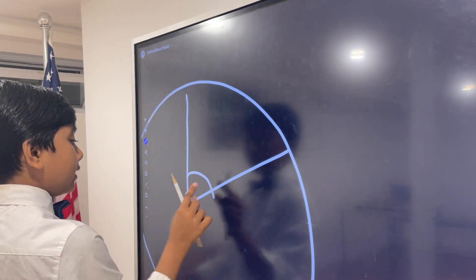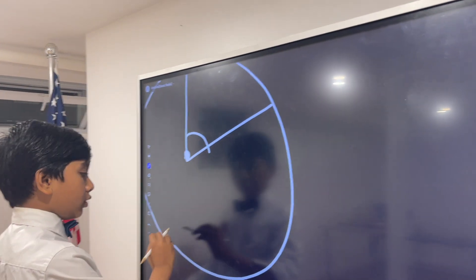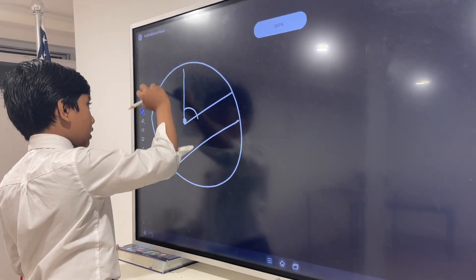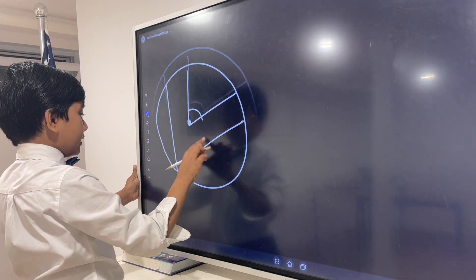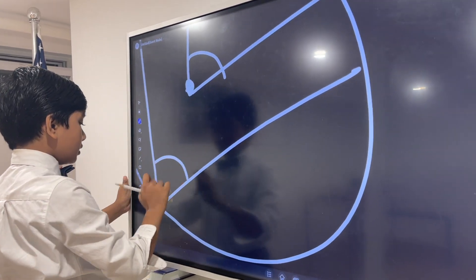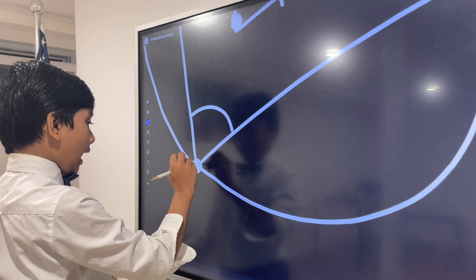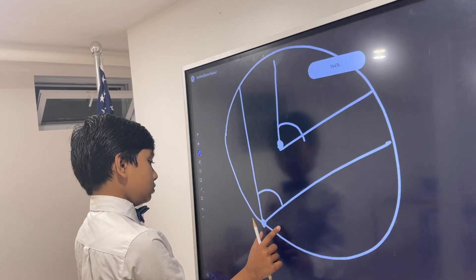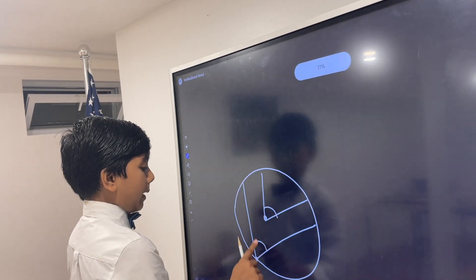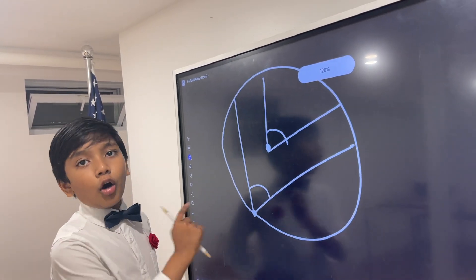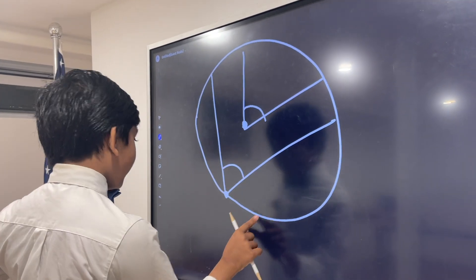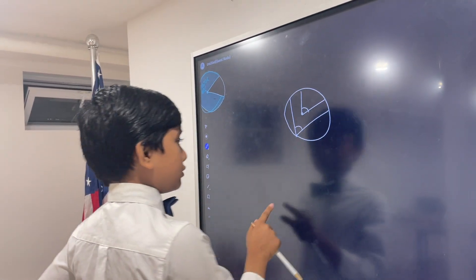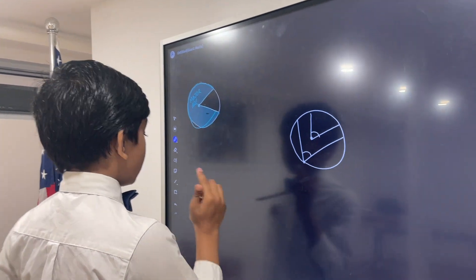However, there is also the inscribed angle, which is an angle that has its vertex on one of the points on the circle. Then the rays protrude from that point. It's also always acute or right. It can never be obtuse, or it's not inscribed. It's just an angle that shares its vertex with the circle.